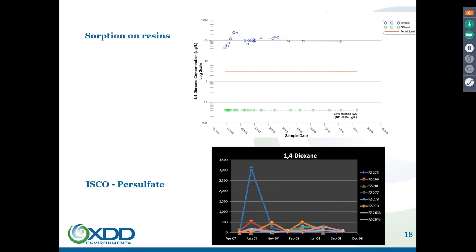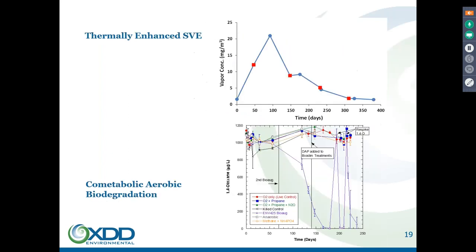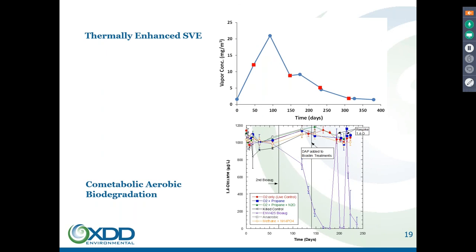1,4-Dioxane as well as chlorinated solvents can be destroyed by persulfate. The Department of Defense funded an ESTCP project looking at thermally enhanced SVE in the vadose zone for a 1,4-Dioxane issue. CERTIP is the fundamental research arm; ESTCP is where they take the theory into field demonstration. They looked at whether thermally enhanced SVE could remove 1,4-Dioxane. As I mentioned, the temperature rise raises volatility and the Henry's coefficient, making it more readily removable.